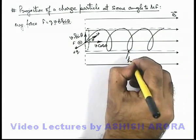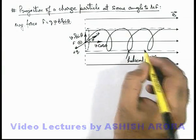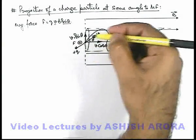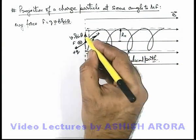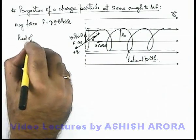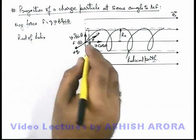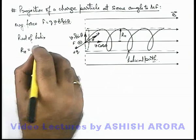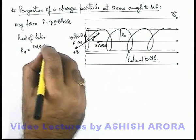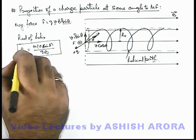So the resulting path of the particle will be a helical path. The radius of this helical path r_h is due to the circulation of the particle by the speed v sin theta. We can write the radius of this helix as r_h = mv sin theta / qB. That is the expression used for the radius of a helical path.